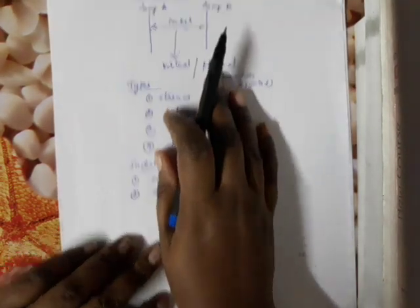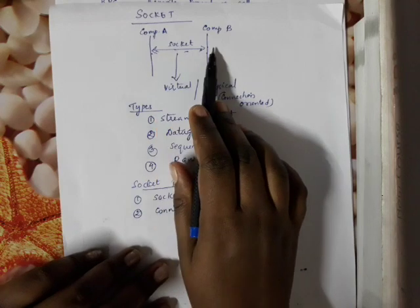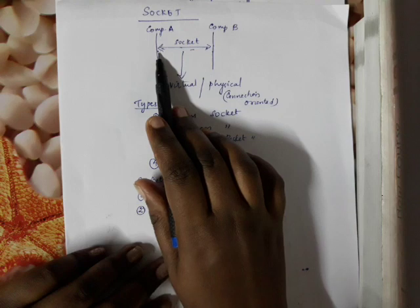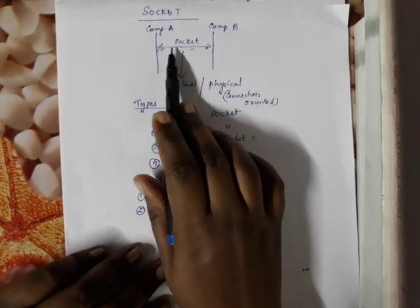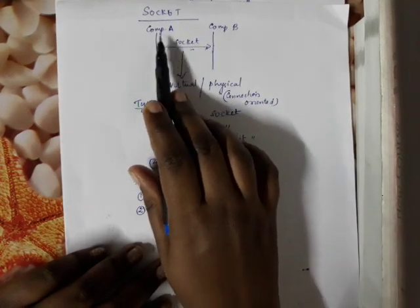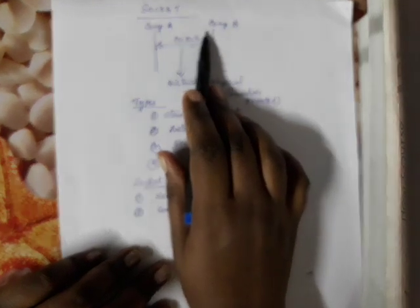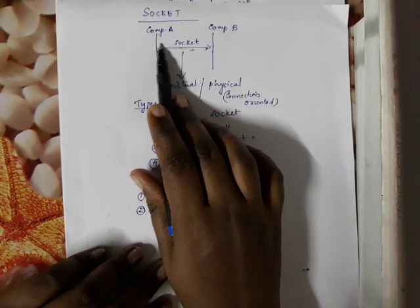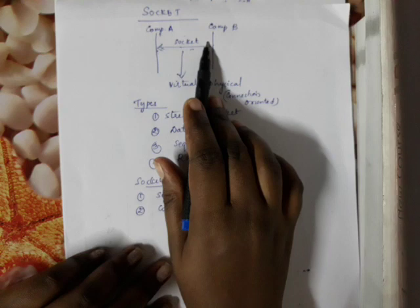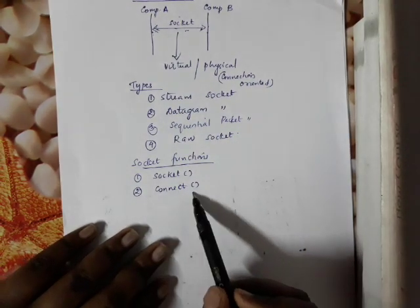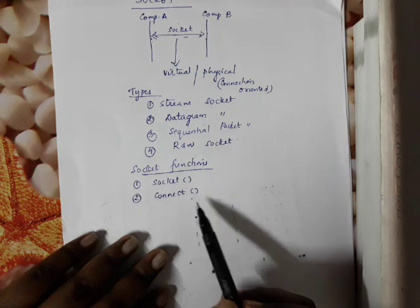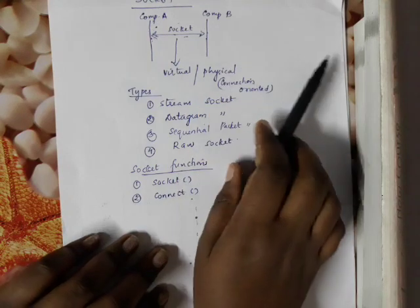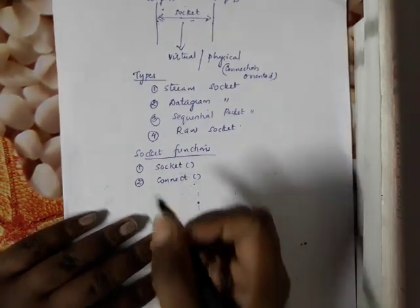In this system, computer A and computer B communicate. One is a client and one is a server. The client asks questions and the server responds. The connect function is used to connect a client with a server — that is how the client connects to the server.